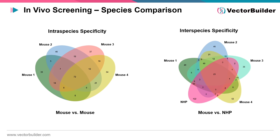VectorBuilder also offers the capability to conduct cross-species comparisons of the screening results. Illustrated on the left is a Venn diagram depicting the overlap of the most enriched peptides identified in mice, while the diagram on the right highlights the shared enriched peptides between mice and non-human primates. This comparative analysis provides insights into species-specific responses and unveils commonalities that may have implications for translational research, helping researchers understand AAV capsid performance across diverse biological contexts.